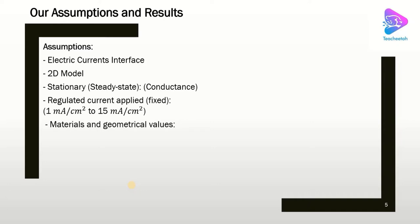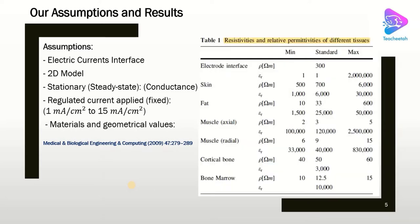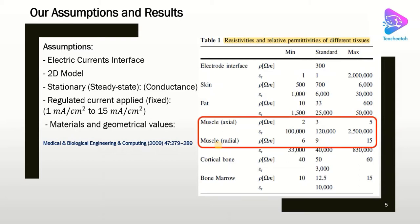We need material and geometrical values for our simulation, using a reference that provides resistivity and permittivity of the domains: electrode interface, skin, fat, muscle, and bone. Bone has two layers — cortical bone and bone marrow. Importantly, muscle has different properties in the axial and radial directions, so we will see how to model an anisotropic material. The geometrical values such as thickness, gaps, and layer dimensions are also based on this reference.